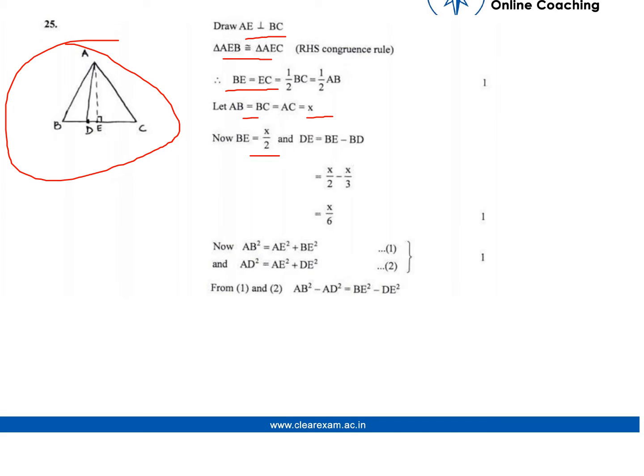Now BE will be x/2, and DE is BE minus BD, so this will be x/2 minus x/3, which comes out to be x/6.